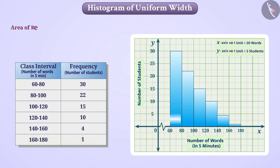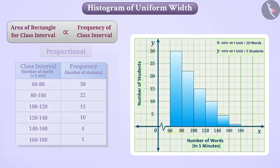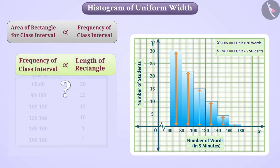The area of a rectangle to be drawn for a class interval in a histogram is proportional to the frequency of that class interval. But here we have kept the frequency proportional to the length. Is it fair?